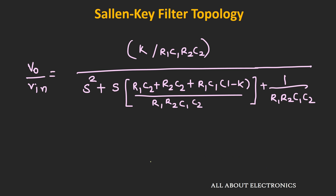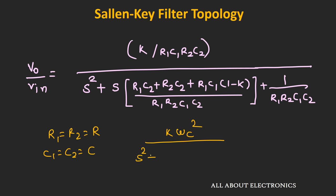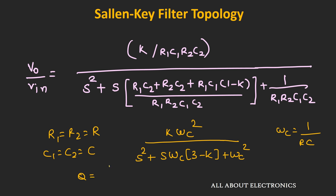To simplify the design, let R1=R2=R and C1=C2=C. In this case, the transfer function becomes K·ωc² / (s² + s·ωc·(3−K) + ωc²), where ωc = 1/(RC). For this design, the quality factor Q = 1/(3−K), meaning Q depends only on the gain value. So just by adjusting the gain of this filter, we can obtain different values of Q.